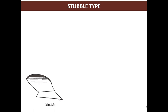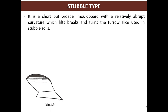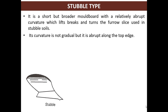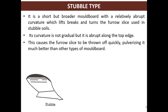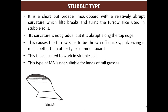Stubble type moldboard is short but broader, with a relatively abrupt curvature which lifts, breaks and turns the furrow slice, used in stubble soils. Its curvature is not gradual but abrupt along the top edge. This causes the furrow slice to be thrown off quickly, pulverizing it much better than other types of moldboard. This is best suited to work in stubble soil. This type of moldboard is not suitable for lands with full grasses.